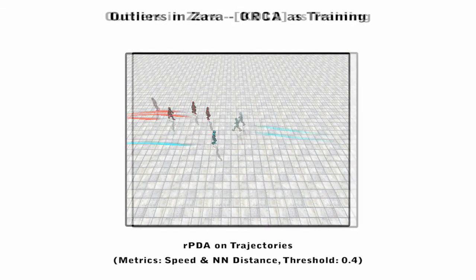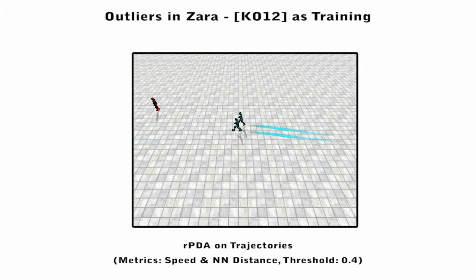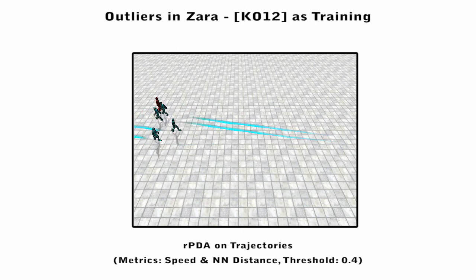When we use training data from a simulation which captures group behaviors, agents who walk in a group no longer appear as outliers.